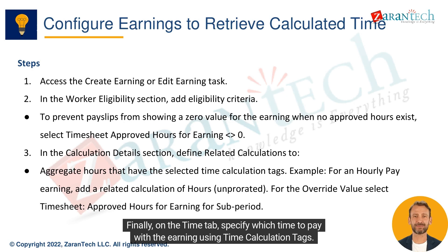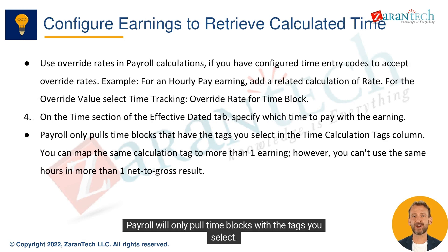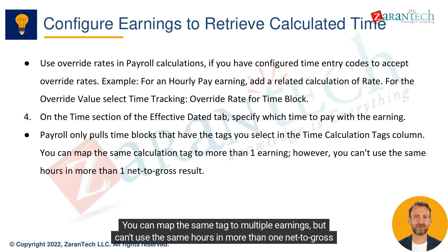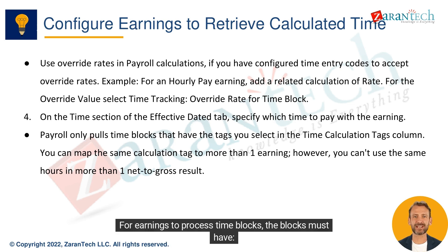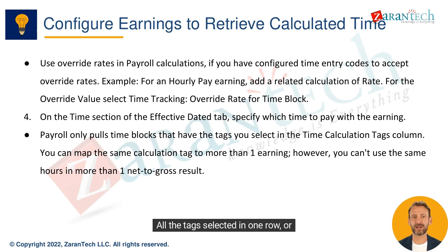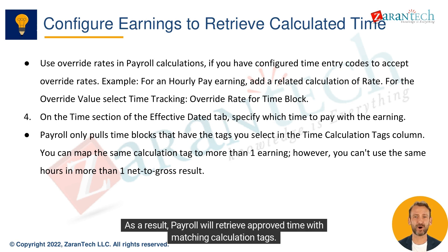Finally, on the time tab, specify which time to pay with the earning using time calculation tags. Payroll will only pull time blocks with the tags you select. You can map the same tag to multiple earnings, but can't use the same hours in more than one net-to-gross result. For earnings to process time blocks, the blocks must have all the tags selected in one row, or all tags specified across multiple rows. As a result, payroll will retrieve approved time with matching calculation tags.